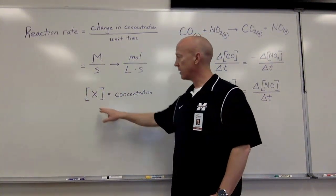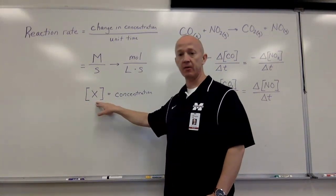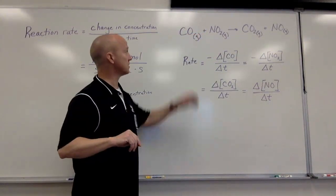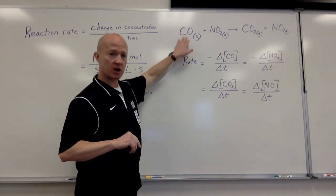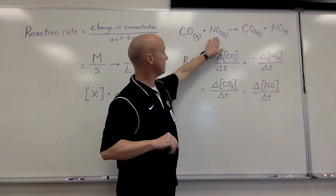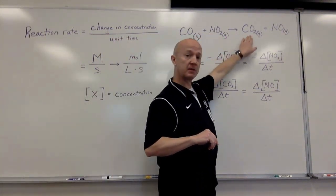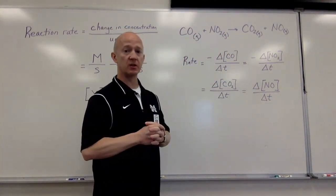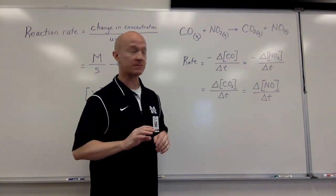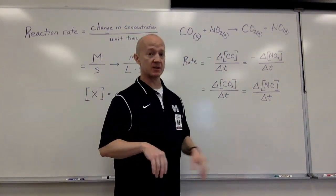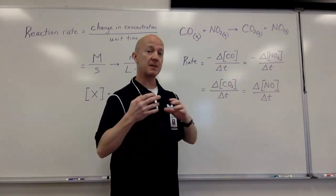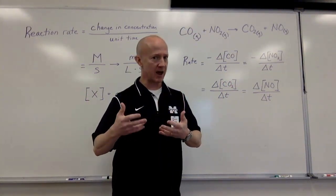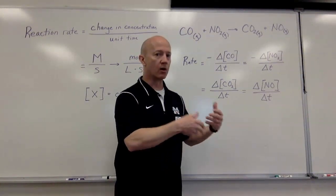Something else you need to know: anytime you see brackets around a compound, we're referring to the concentration of that compound. Let's use this equation as an example — the reaction between carbon monoxide and nitrogen dioxide to yield carbon dioxide and nitrogen monoxide. The rate of this reaction could be expressed in one of four ways. First of all, the reactants are going to form products, meaning as this reaction proceeds, we'll have less and less reactant and more and more product.